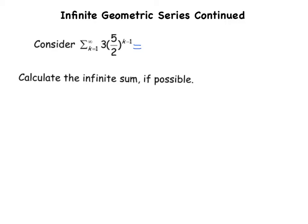So when you plug 1 in for k, you're going to get 3 times 5 halves to the 0, so that's just 3. When you plug in 2, you get 3 times 5 halves to the 1. And when you plug in 3, you get 3 times 5 halves squared.